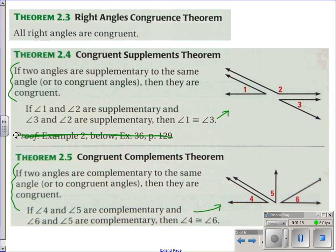So for the top one, theorem 2.3, right angles congruence theorem, it says all right angles are congruent. So that should make sense. All right angles are 90 degree angles. So if you have a couple of 90 degree angles, they're all equal to each other, so they've got to be congruent. They're all 90 degrees. They're all the same, which means they're congruent. So it's very logical. It seems kind of simple, but it kind of is. If you are dealing with multiple right angles, you can just make the statement, they are congruent to each other.